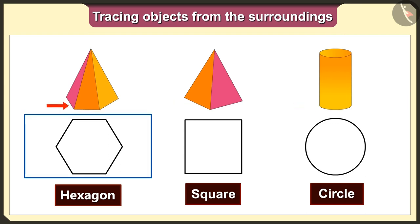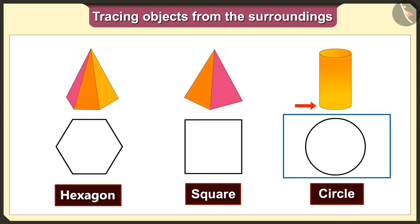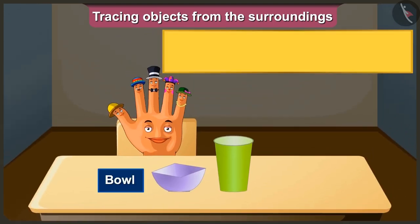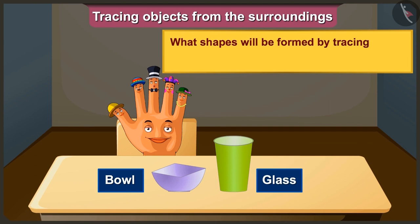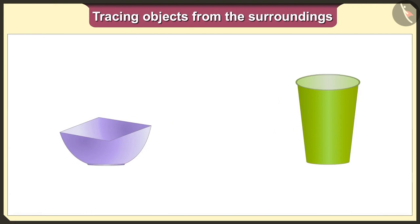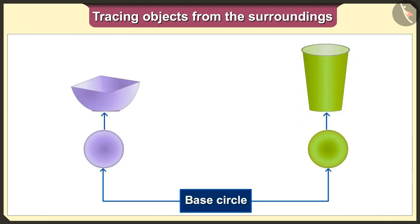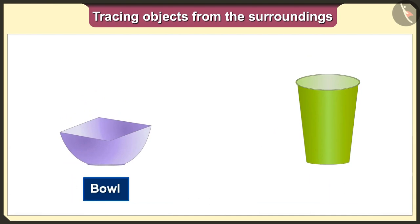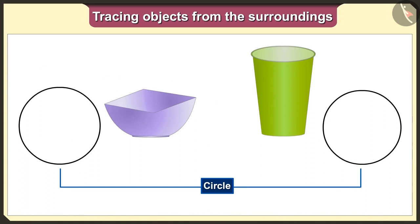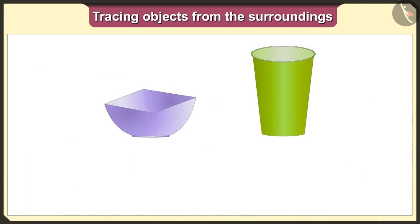So when we trace these solid shapes, we get hexagon, square, and circle shapes according to their bases. Now let's look at another example. Which shapes would we get if we put a bowl and glass straight and upside down and then trace them? If we keep the bowl and glass straight, their base is a circle, so we will get the circle shape.